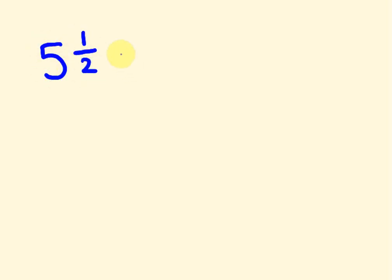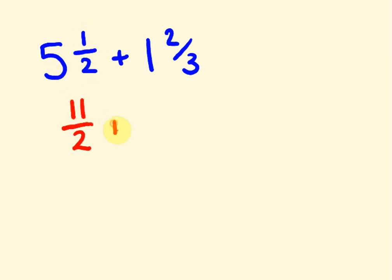Let's do another one: five and a half plus one and two thirds. Because we have mixed numbers here, we have to turn them into improper fractions. We keep the bottom number the same — so the two. We multiply the whole number by the bottom: five times two is ten, plus one is eleven. Then for this one we keep the bottom number the same. One times three is three, plus two is five. We've got them written as two improper fractions we're adding together.